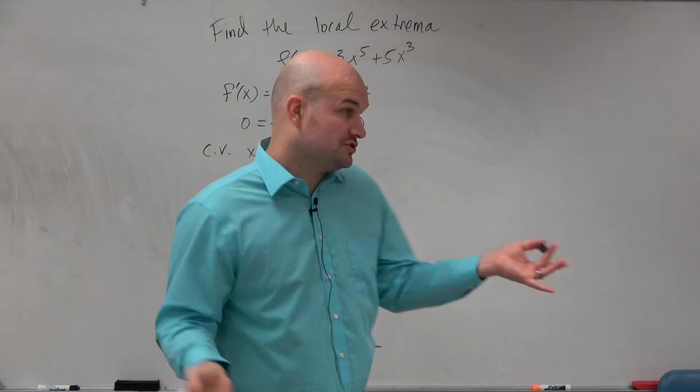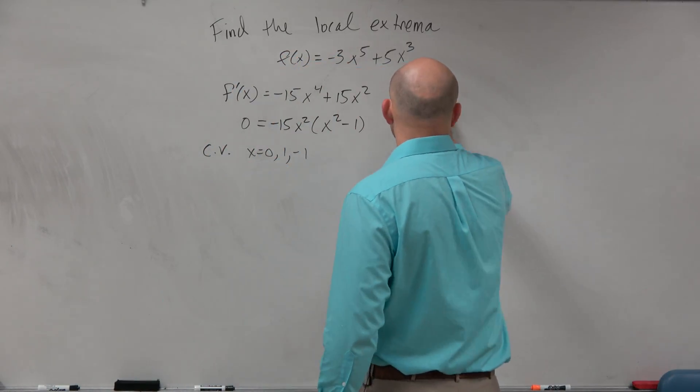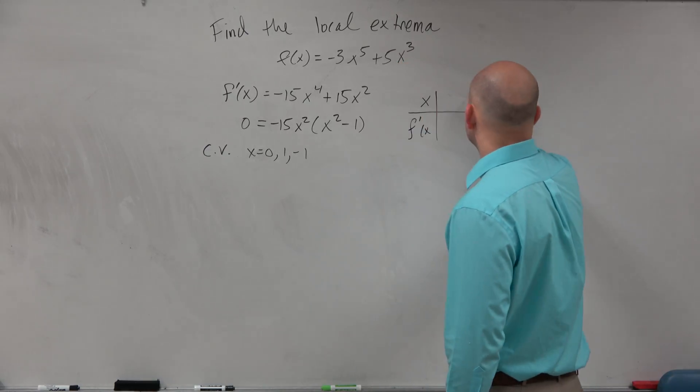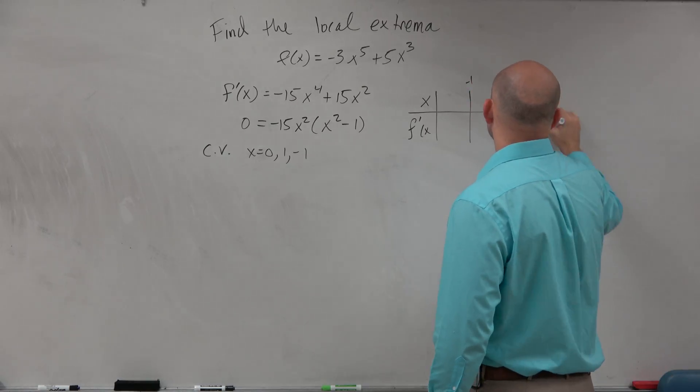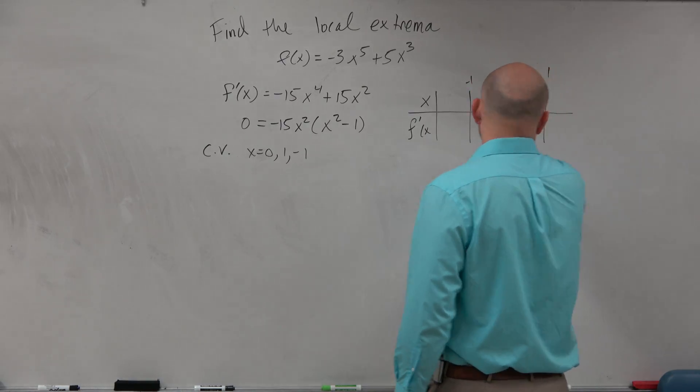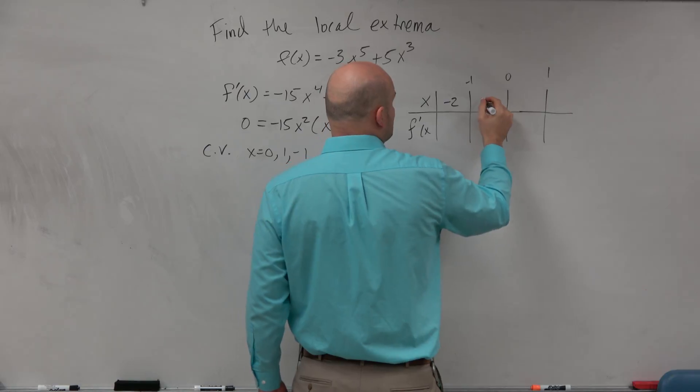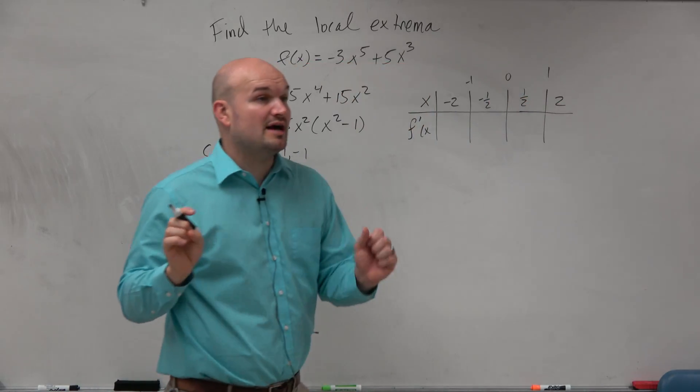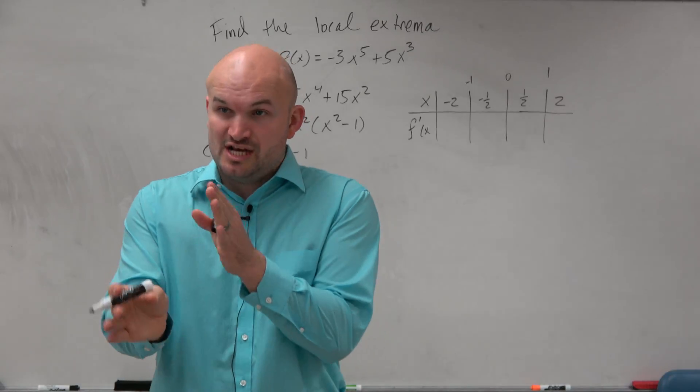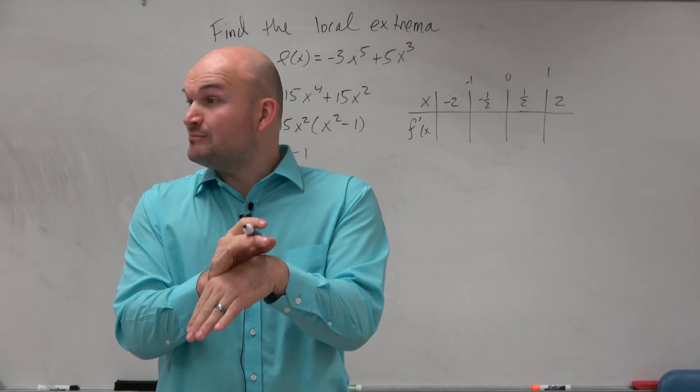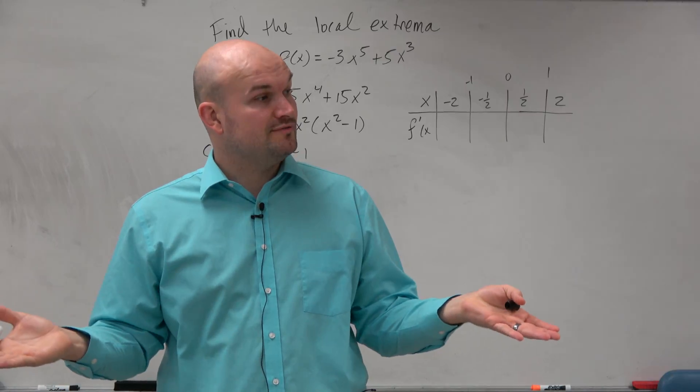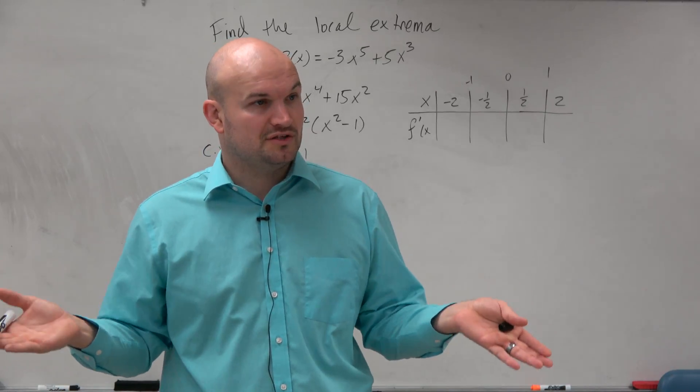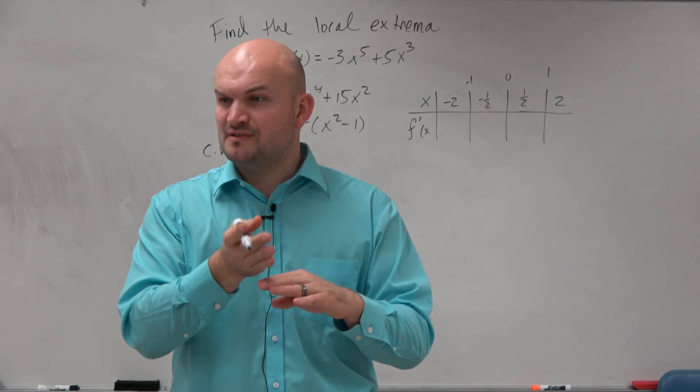If I was going to use the first derivative test, I would just create a table for f prime of x. Hopefully this is what you guys did. Just pick some points to the left and right of each of those critical values and test them. By the first derivative test, if it changes from positive to negative, we have a relative maximum. If it changes from negative to positive, we have a relative min.